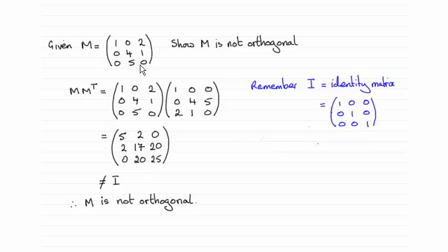And to do that, you need to multiply M with its transpose, and hopefully you'll find that you don't get the identity matrix 1 0 0 0 1 0 0 0 1. And that will show us that M is not orthogonal.